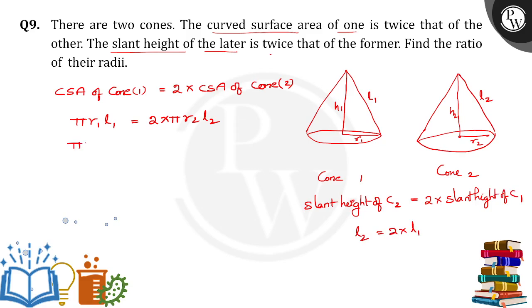Okay, so substituting here pi R1 L1 is equal to pi R2 into, in place of L2 we can write it as two times of L1. See, pi pi cancel, L1 L1 cancel. So, R1 is equal to 4 into R2.